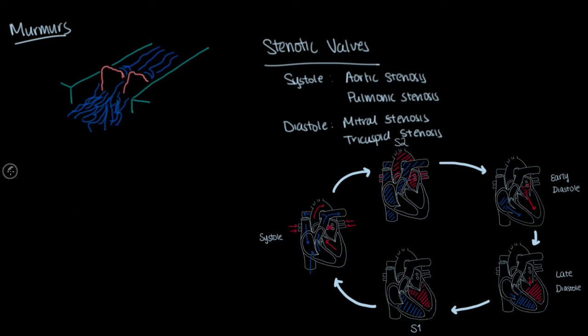In systole, a stenotic aortic or pulmonic valve sounds like this because as the ventricles start to generate pressure, there is very low flow at first as the valve struggles to open, thus starting off with a softer sound. And as the ventricles generate a strong enough pressure, the valves open more, thus creating much higher flow through the valves and leading to a crescendo sound.